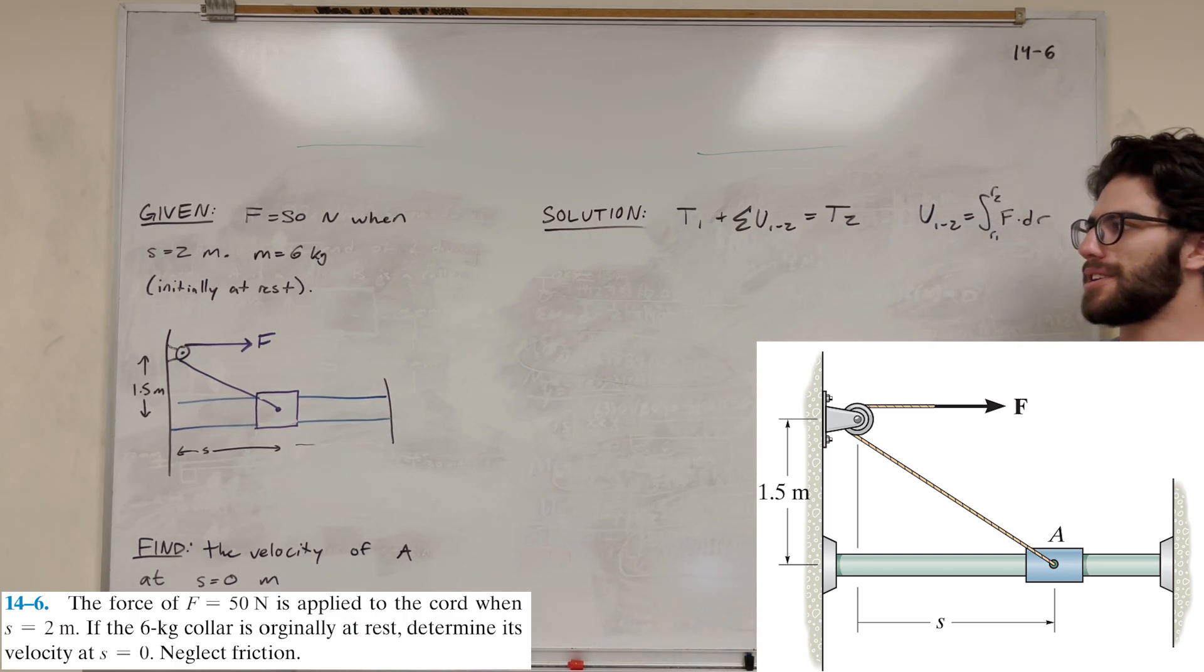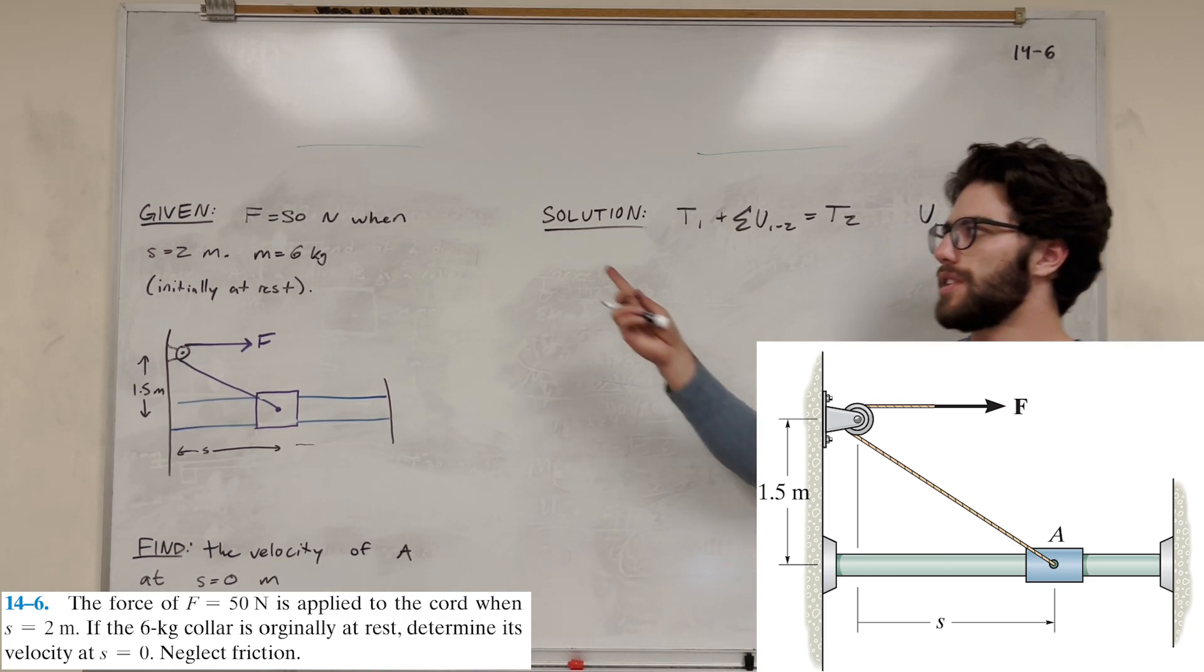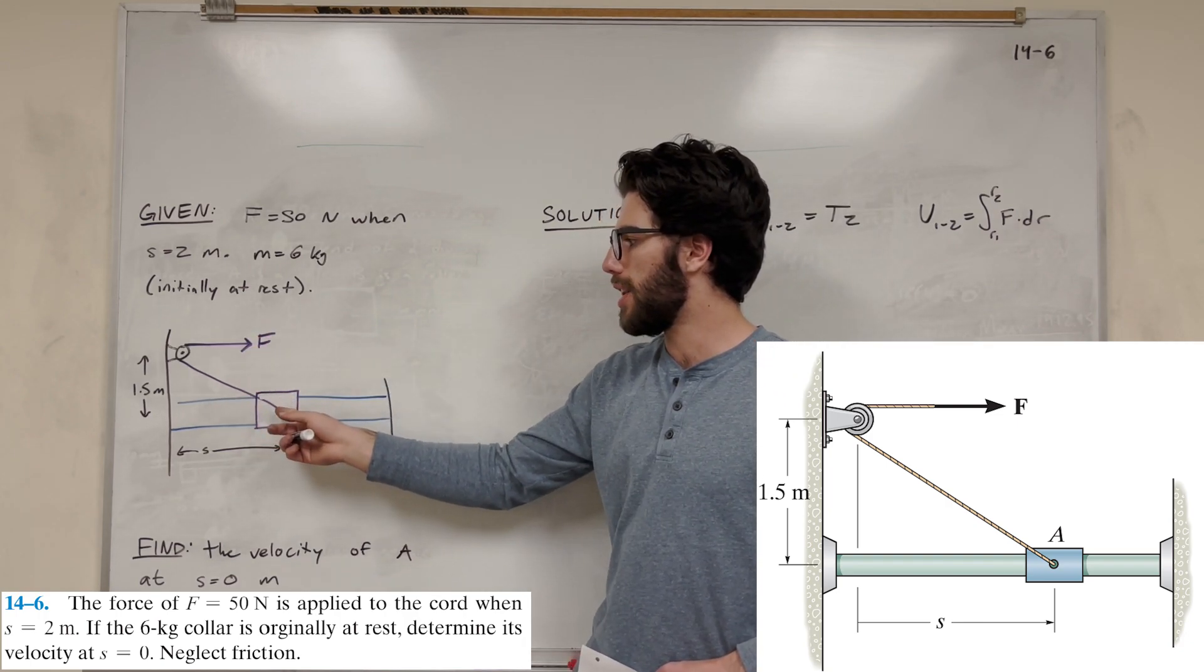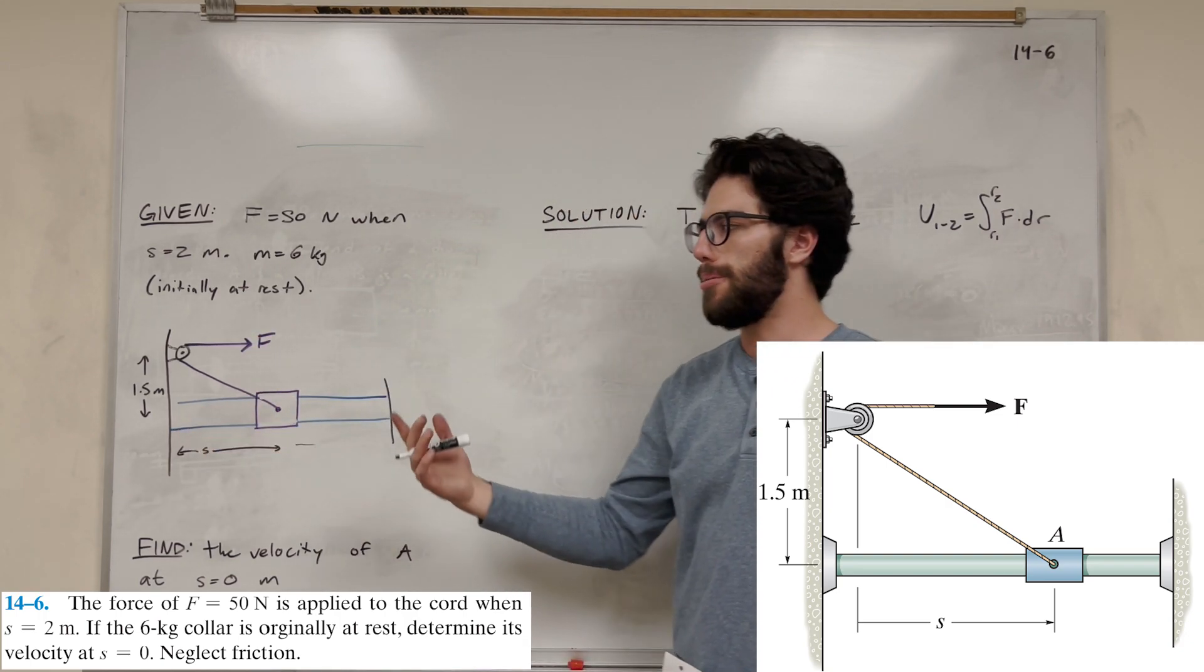What's up, cop gang? Welcome back to some dynamics. Let's solve this problem. We have this constant force of 50 newtons being applied to this pulley, and it's pulling this block down this pipe.